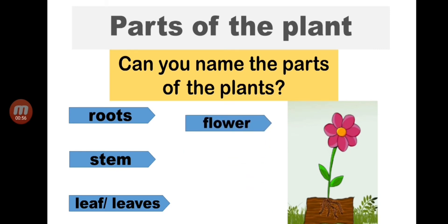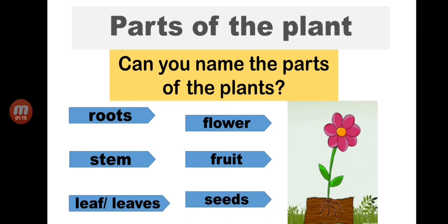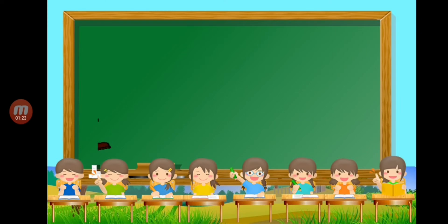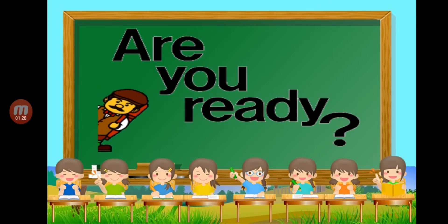The flower is the one that helps the plant to make fruits. And the other parts are fruit and seeds. Seeds are the ones that help the plant to make new plants. Very good.